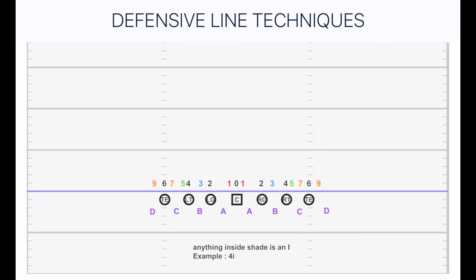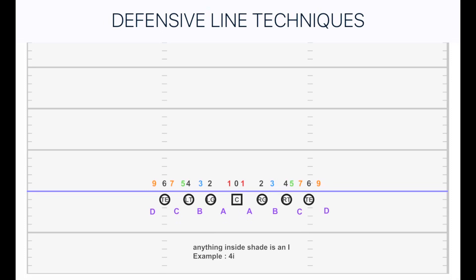B-gap is from the right guard to the right tackle — it's in between guards and tackles. So right guard to right tackle, left guard to left tackle. That B-gap can be to the right or to the left, but it's in between the right guard and the right tackle. More or less with B-gaps we're talking about iso runs, belly, things like that.